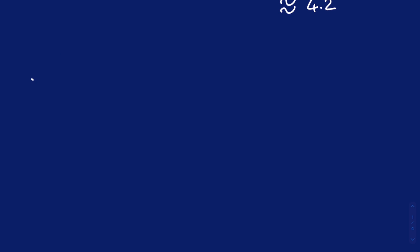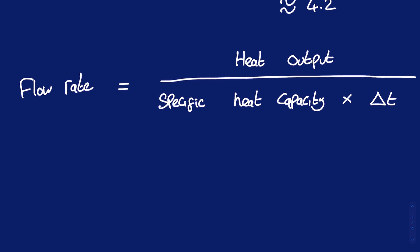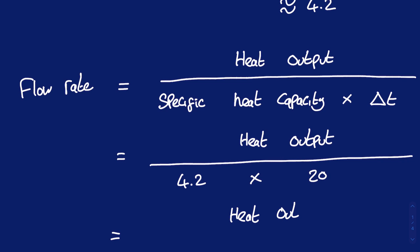Here's how these relate to each other. The industry standard is to have a delta T of 20 degrees Celsius, so this formula simplifies down to heat output divided by 84. Clearly, heat output from the radiator is a key factor when calculating flow rate.